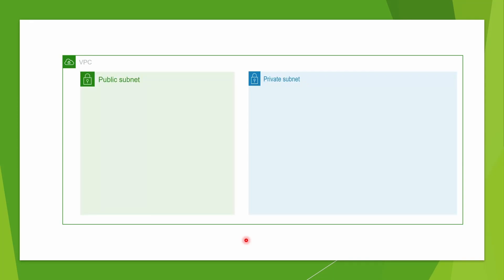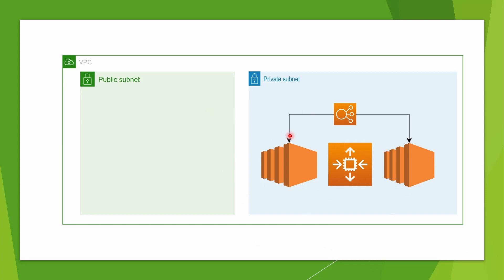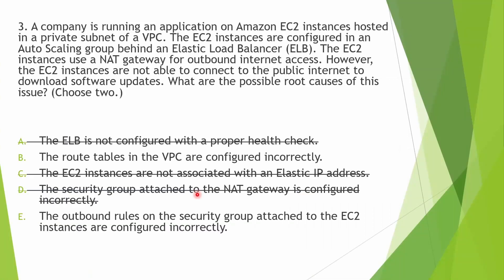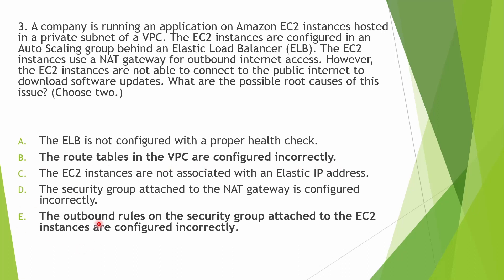There is a VPC with a private subnet and a public subnet. The private subnet has EC2 instances with auto scaling and ELB, and a NAT gateway connecting through an internet gateway. ELB has nothing to do with outgoing traffic, so that option is out. Route tables can be configured incorrectly, preventing the instances from reaching the internet — that is a valid cause. NAT gateway does not have a security group; it uses network ACLs instead. Therefore the correct answers are: route tables in the VPC are configured incorrectly, or the outbound rules on the security group attached to the EC2 instances are configured incorrectly.